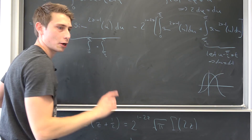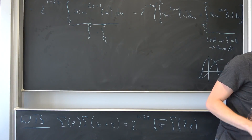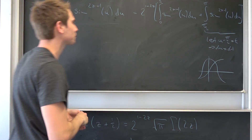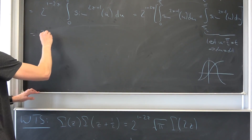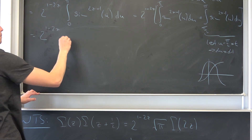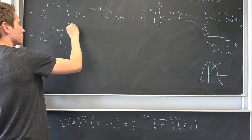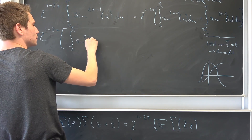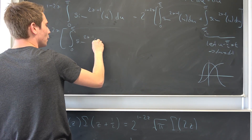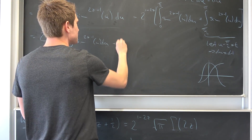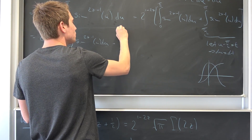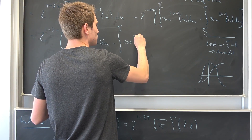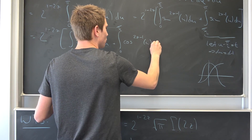So overall we end up with 2 to the 1 minus 2z power times the integral from 0 to pi over 2 of sine to the 2z minus 1 of u du, plus the integral from 0 to pi over 2 of cosine to the 2z minus 1 of u du.